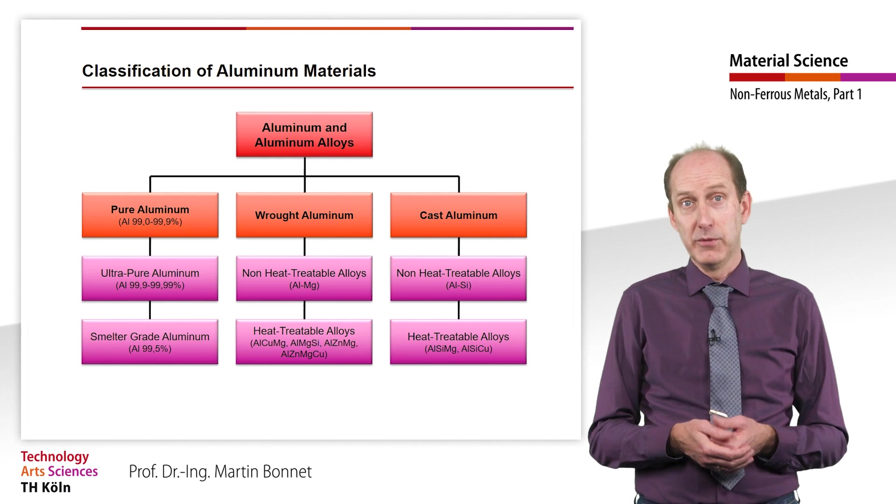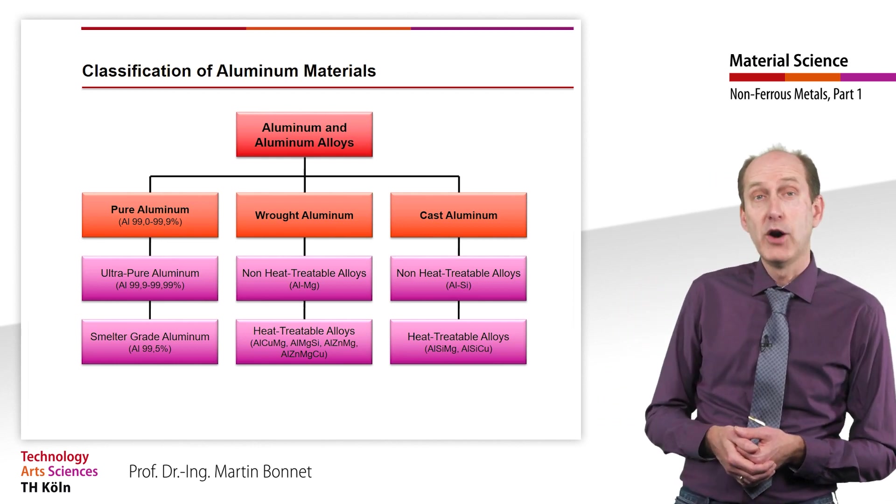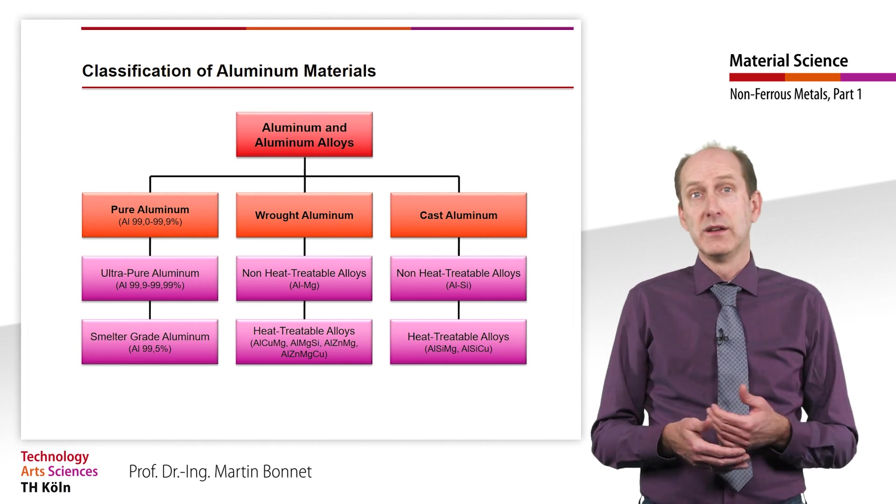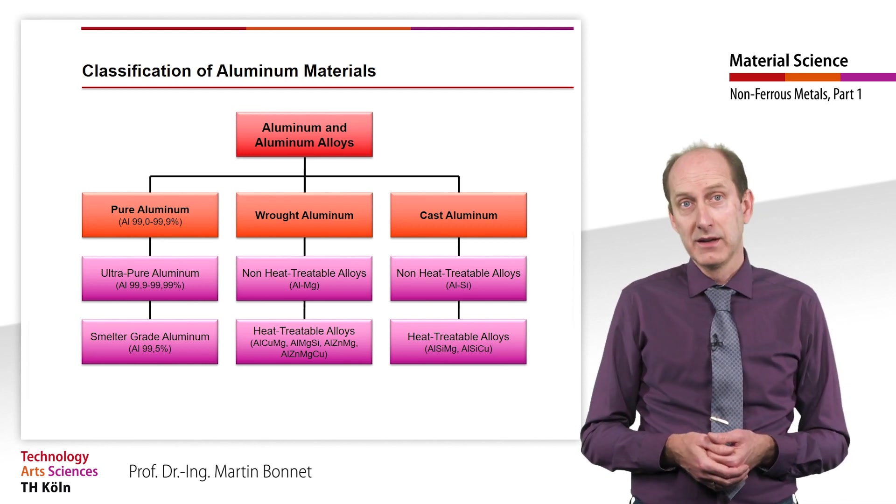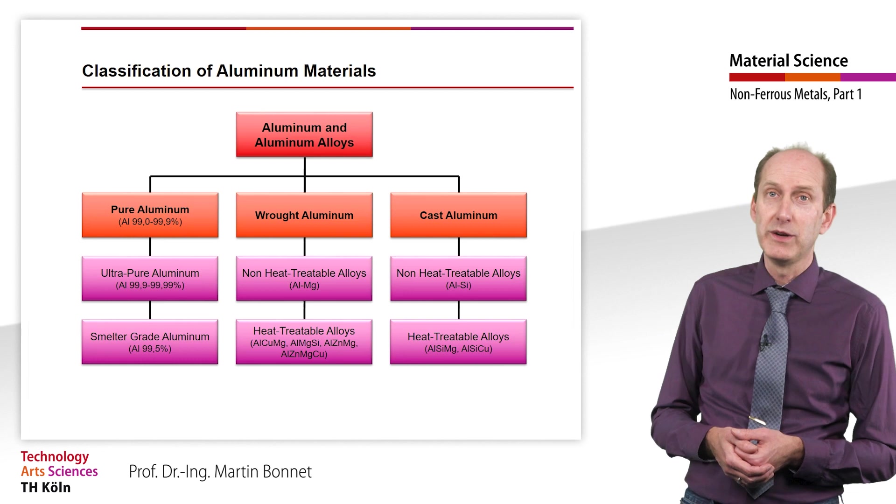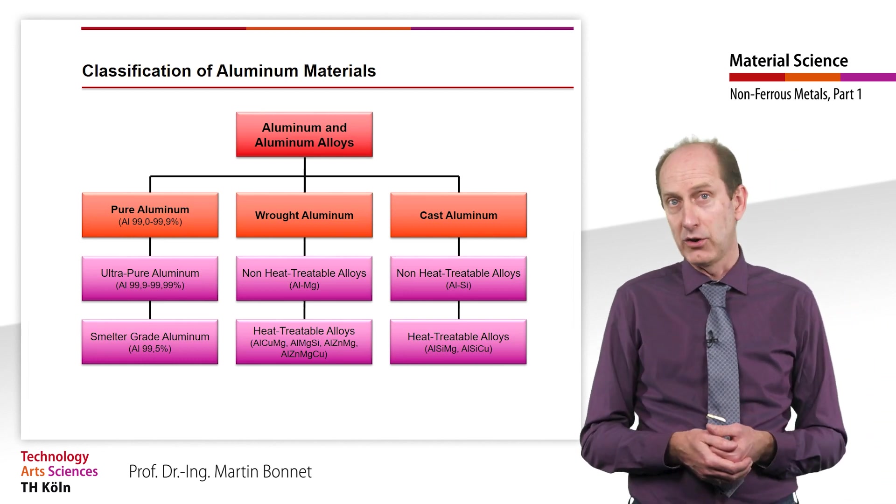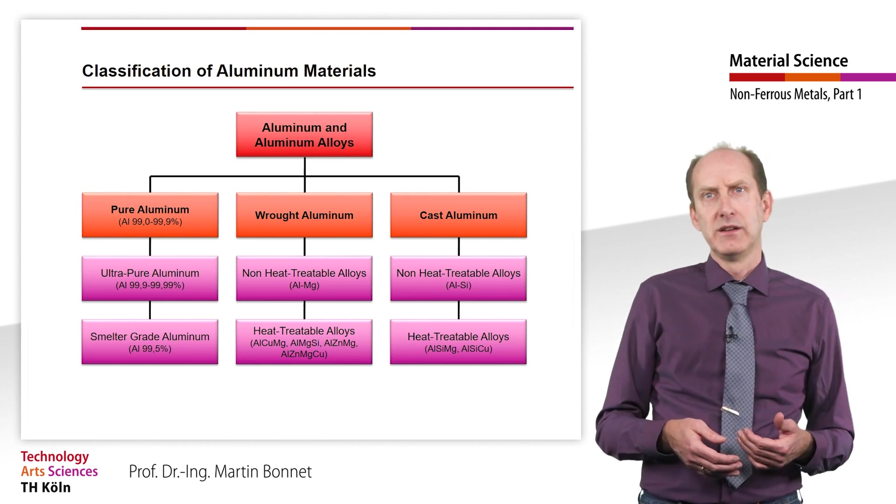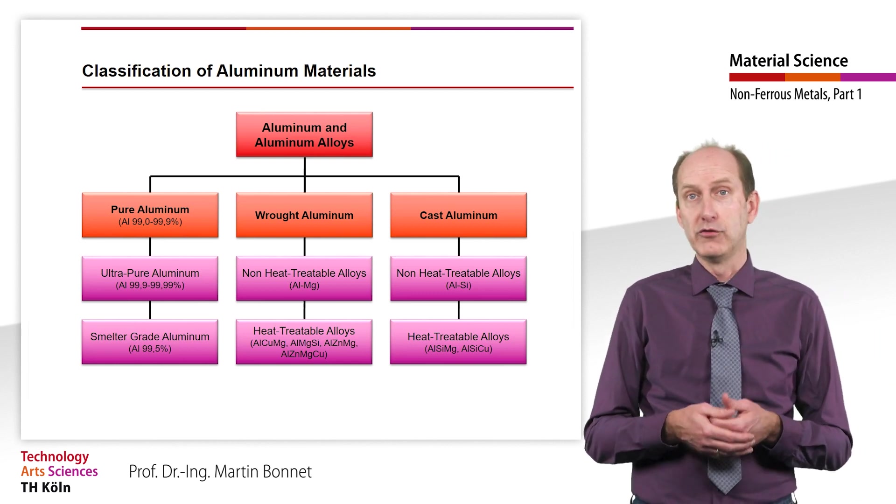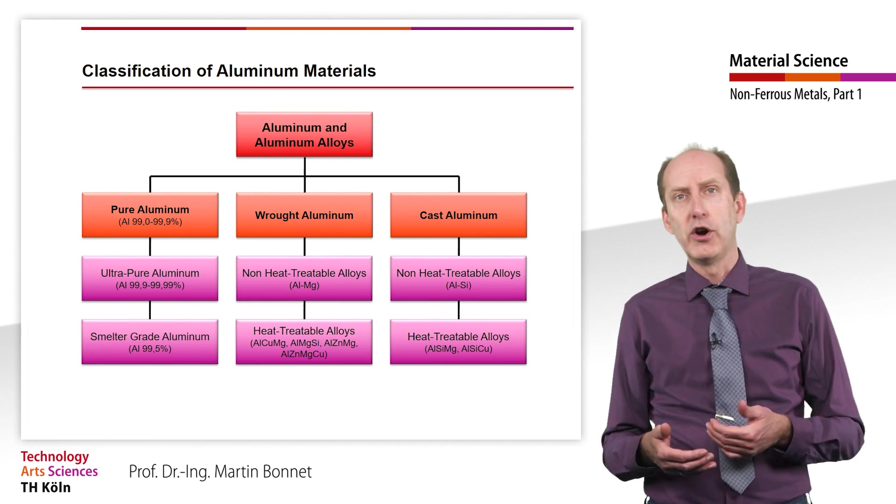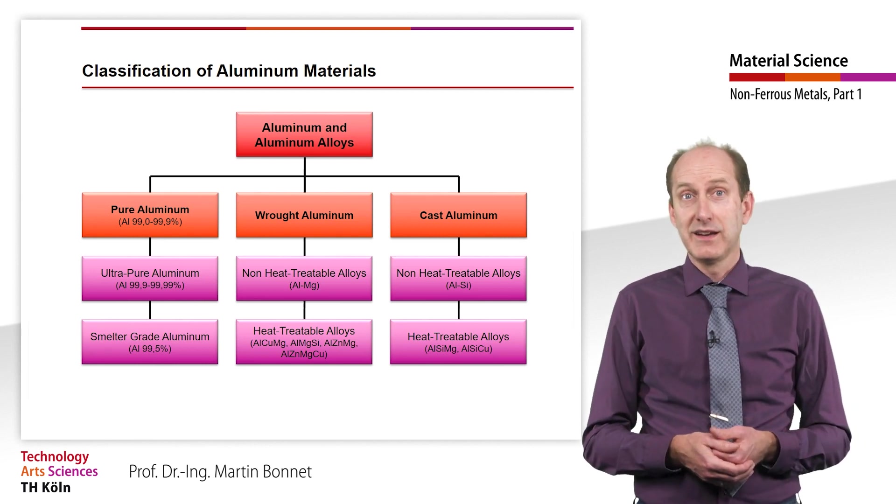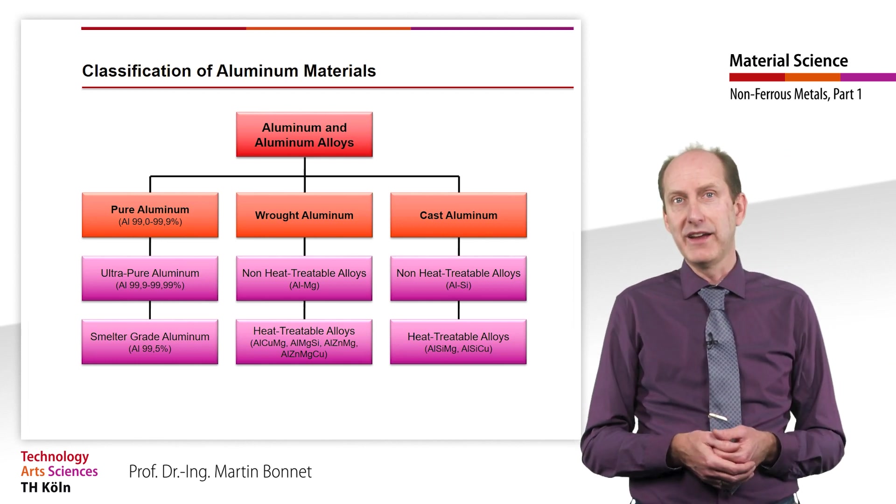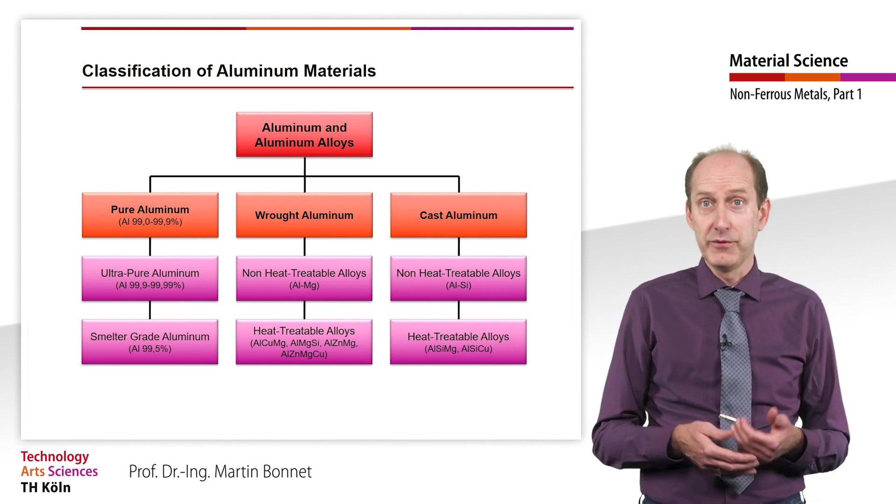The most important alloying elements found in aluminum materials are magnesium, silicon, zinc and copper. A distinction is made between wrought and cast aluminum alloys. Wrought alloys are alloys that have a high ductility and are therefore suitable for rolling, pressing, drawing and forging. Casting alloys, which are processed exclusively by casting, are distinguished from these.